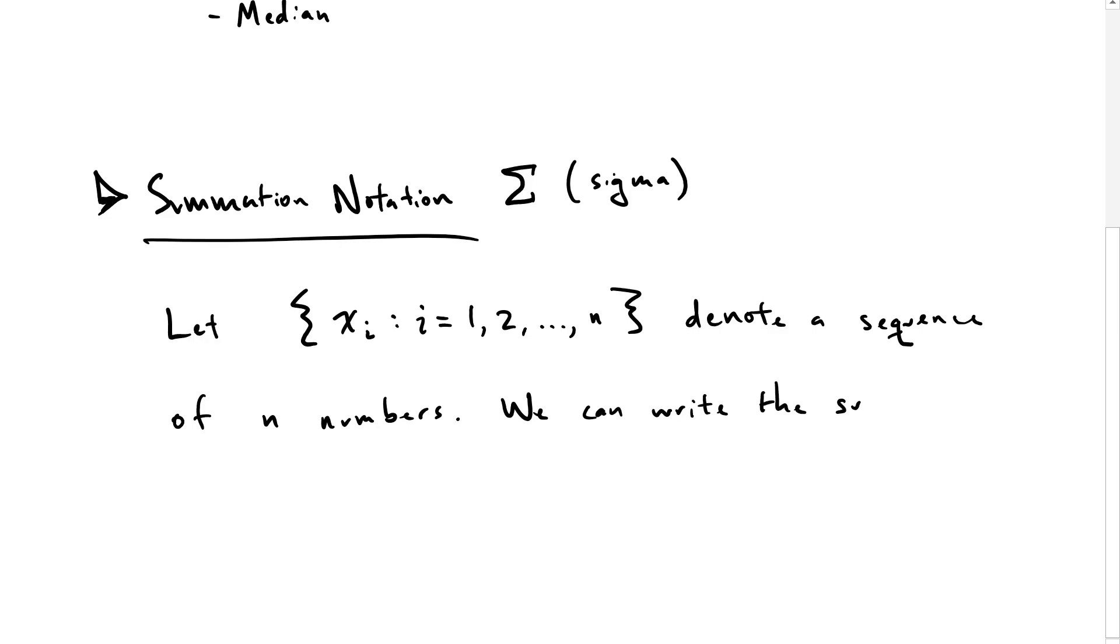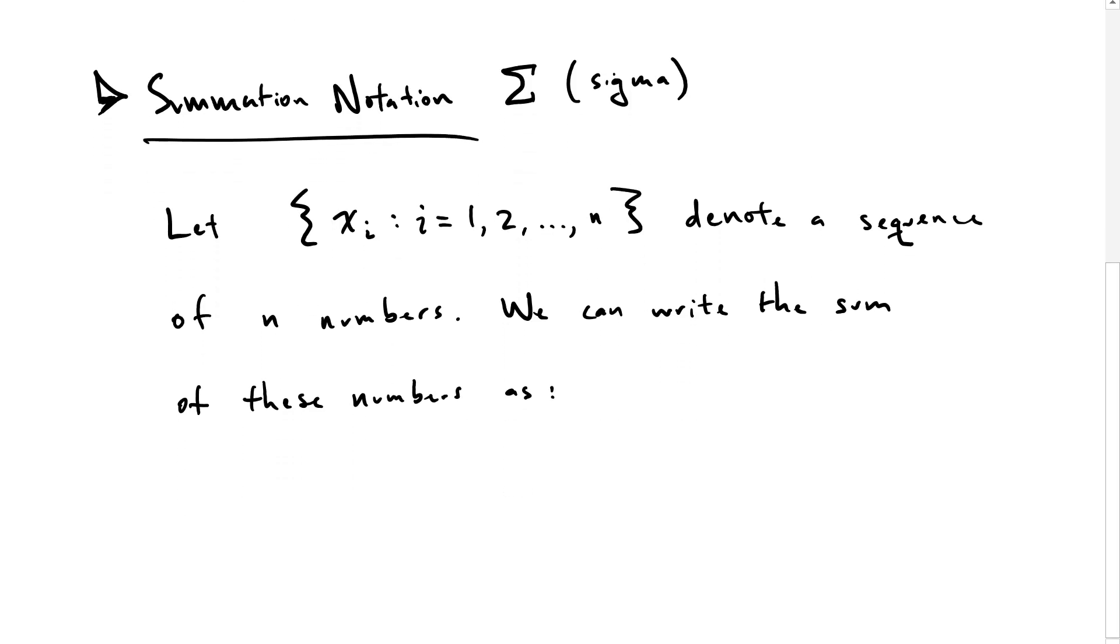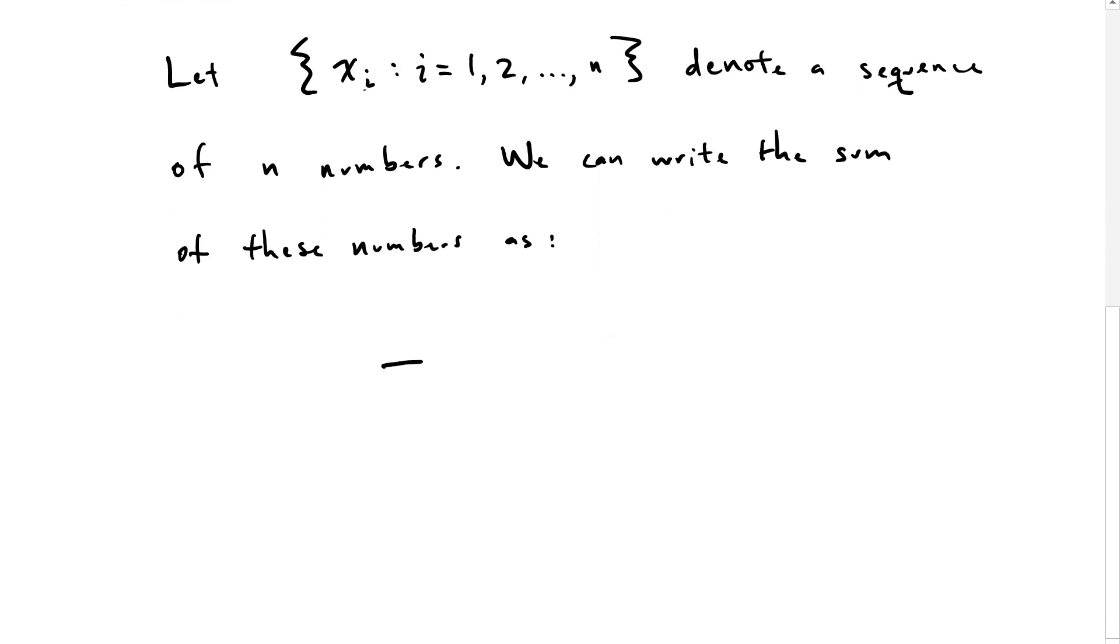We can write the sum of all of these numbers as starting from the first one in the index all the way to the nth number. The summation of x sub i is just equal to x1 plus x2 plus x3 plus x4 all the way up to xn.